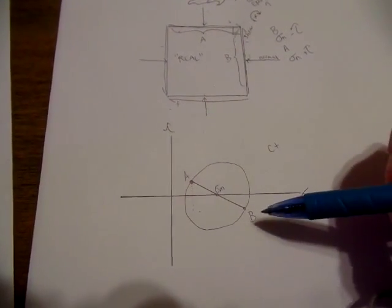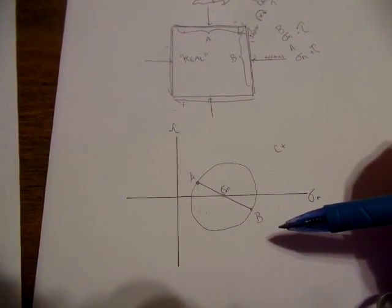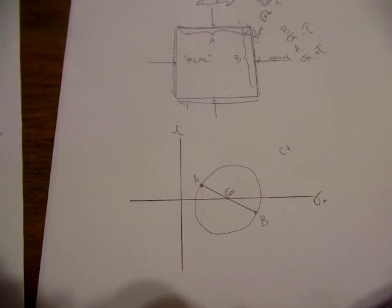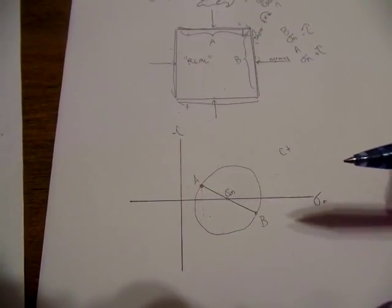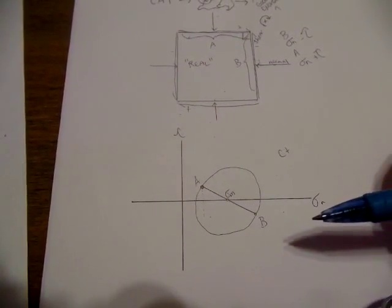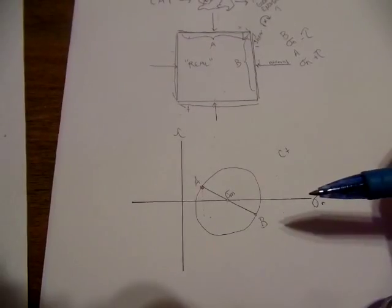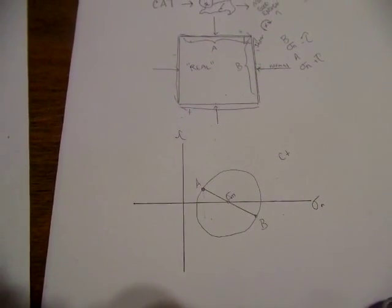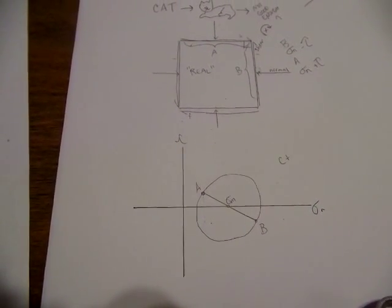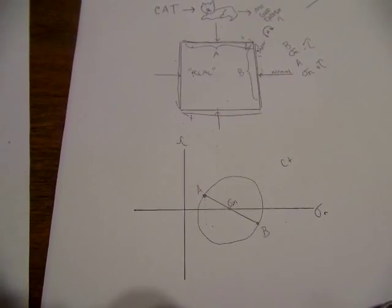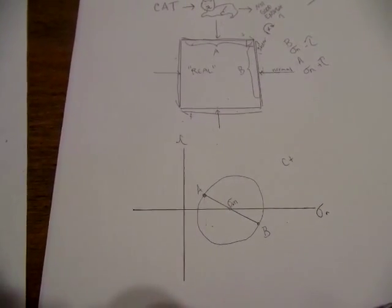Now the reason why a Mohr circle is also so valuable is that it's giving us the chance to graphically represent the relationship between normal stress and shear stress. And that's gonna help us visualize or conceptualize how those things are gonna change in concert with each other.